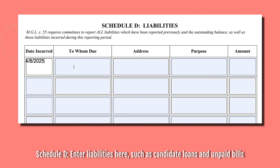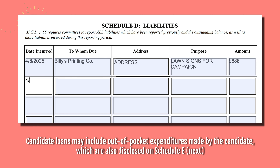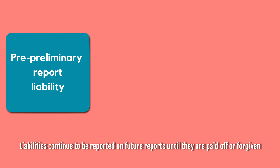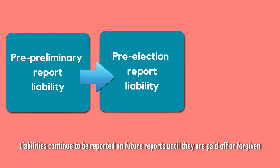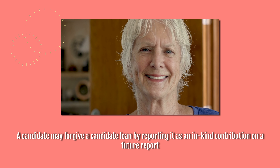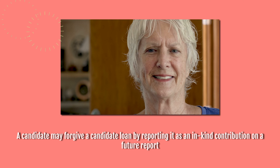Schedule D is where you enter liabilities, such as candidate loans and unpaid bills. Candidate loans may include out-of-pocket expenditures made by the candidate, which are also disclosed on Schedule E. Liabilities continue to be reported on future reports until they are paid off or forgiven. A candidate may forgive a candidate loan by reporting it as an in-kind contribution on a future report.